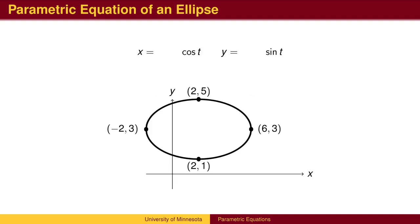Let's write parametric equations for this ellipse. We can think of this ellipse as the unit circle which we have modified by shifting and stretching. If we let x equal cosine of t and y equal sine of t, we will get the standard unit circle, starting at the right and proceeding counter-clockwise.